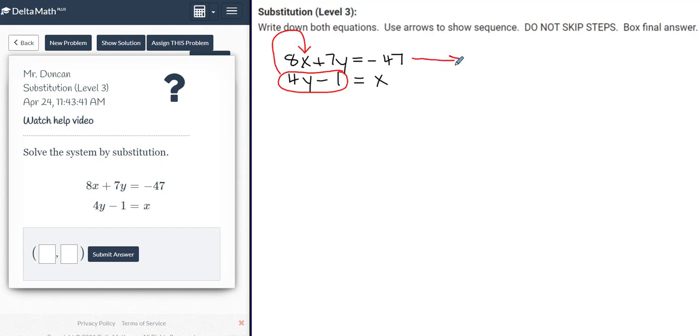I'm going to draw an arrow and take this top equation and put 8 parentheses. I have to fit 4y minus 1 in here. I've got 8 parentheses, 4y minus 1. Close the parentheses and then rewrite the rest of the equation. Plus 7y is equal to negative 47.